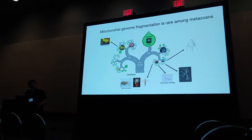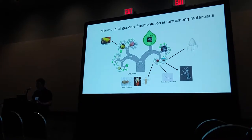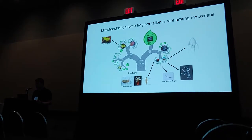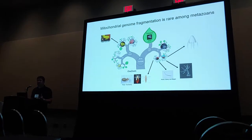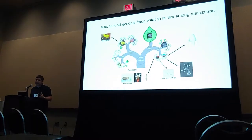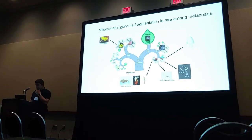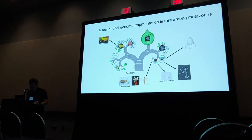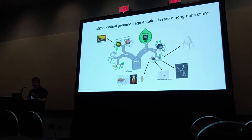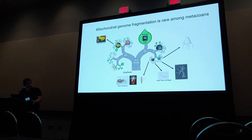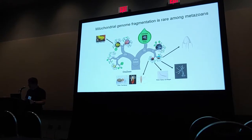That being said, we do see a few cases of fragmented mitochondrial genomes that pop up across the metazoan tree of life. These are cases where there's the full set of genes, or close to the full set, but instead of being on a single chromosome, they're spread across multiple different mitochondrial chromosomes. We see examples in sponges, some jellyfish, some parasitic worms, and then at least three times within insects: in the thrips, the book lice, and the parasitic lice.